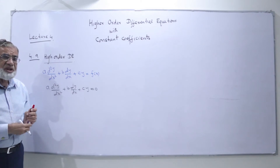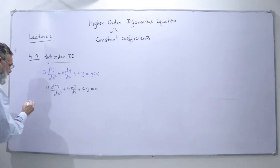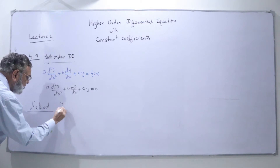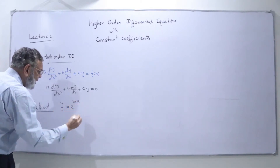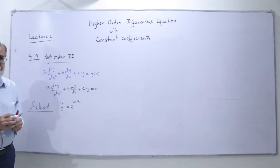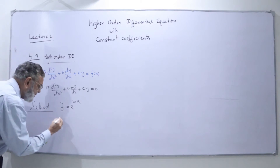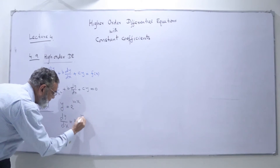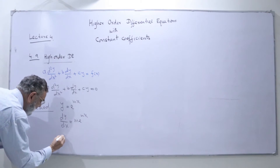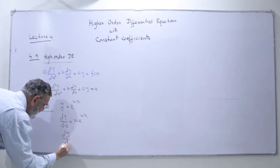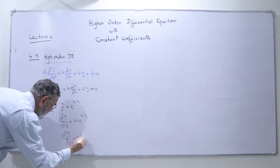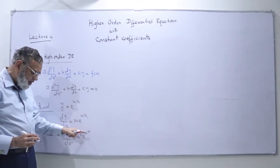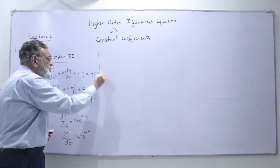I am going to solve this second order differential equation with constant coefficients. The method is: we make a substitution y = e^(mx) and say it is a solution of the differential equation, which means it must satisfy the equation. I find dy/dx = m·e^(mx). I take the second derivative because I want to substitute: d²y/dx² = m²·e^(mx), since the derivative of mx is m, giving m × m = m².